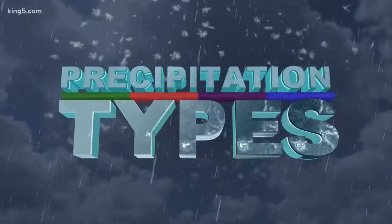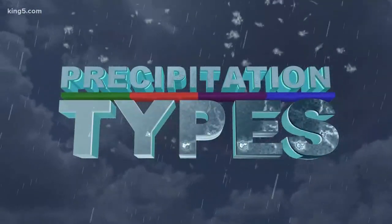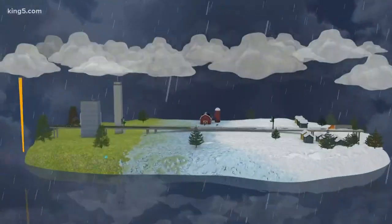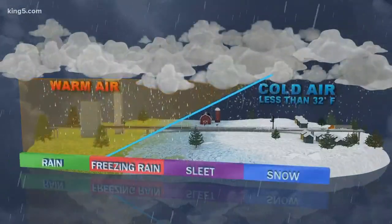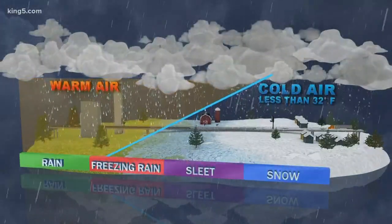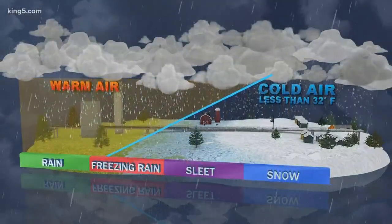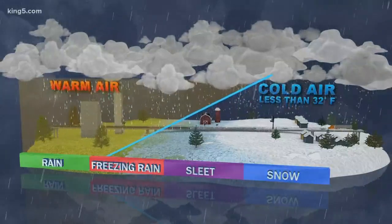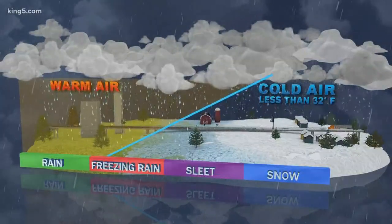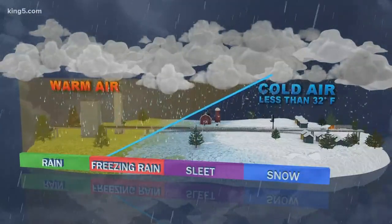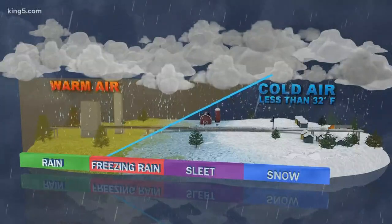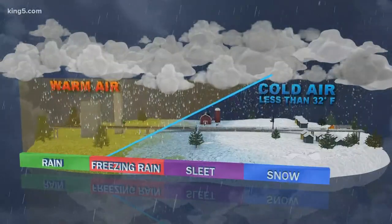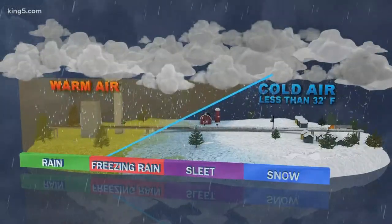That's our Pride of the Pacific Northwest segment here. Precipitation types — it's not a game, it's more just a weather 101 class. You guys know the typical types of precipitation on the bottom: you have rain, freezing rain, sleet, snow. Graupel is one of those that we don't really talk about too much because it's the lesser known of the precipitation types.